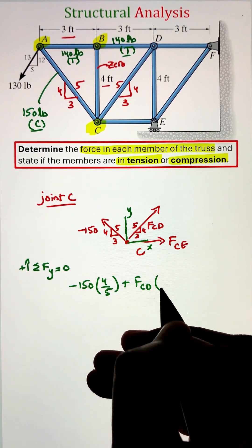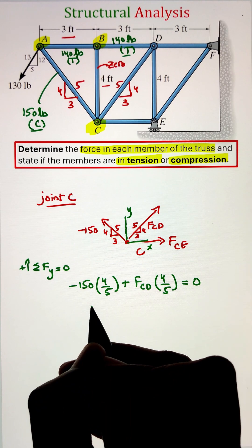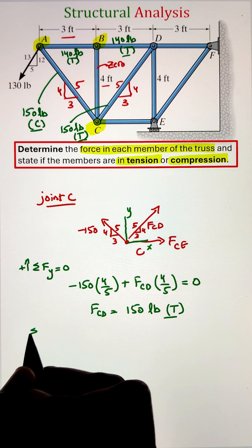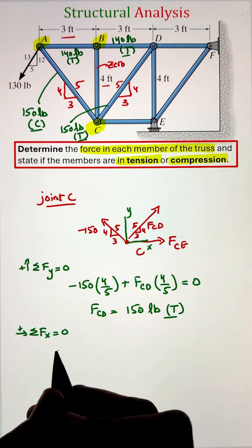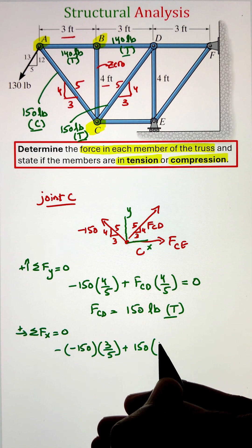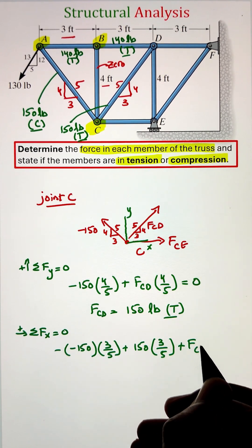Applying the equilibrium equation and simplifying, FCD is coming as 150 pounds in tension, whereas the value of FCE is coming as negative 180 pounds. This negative sign is indicating that the member is in compression.